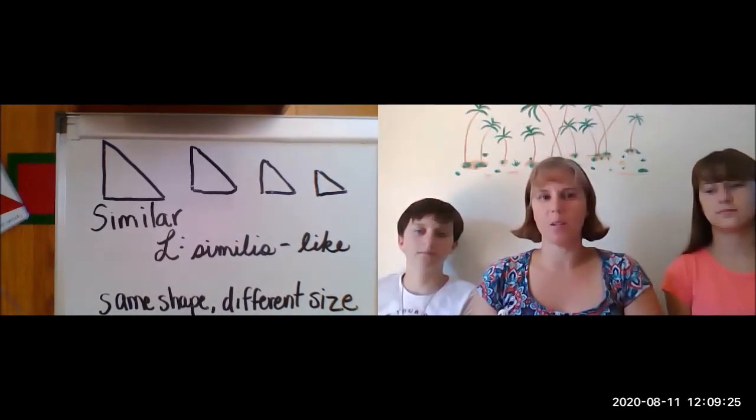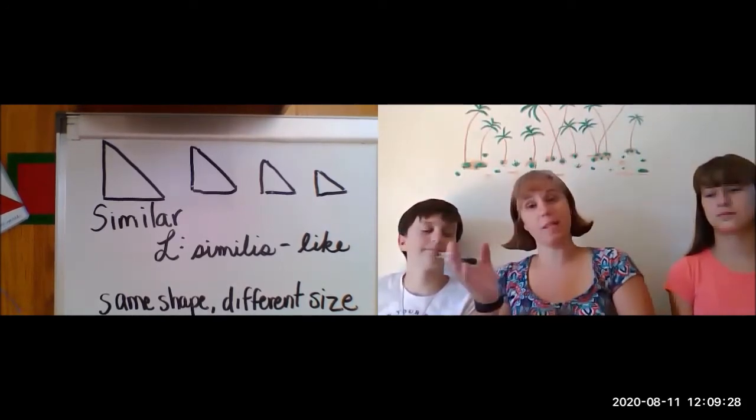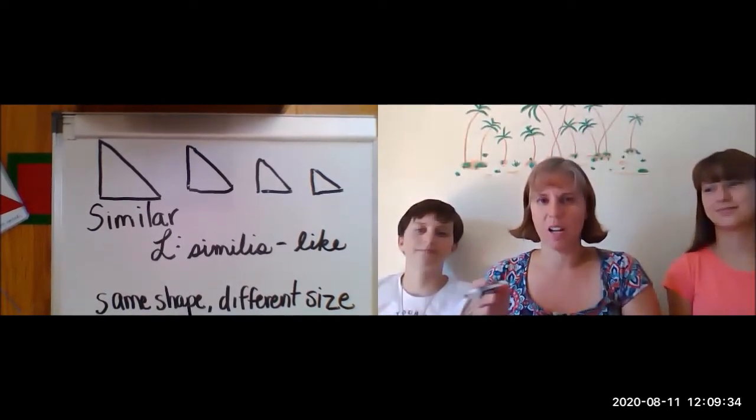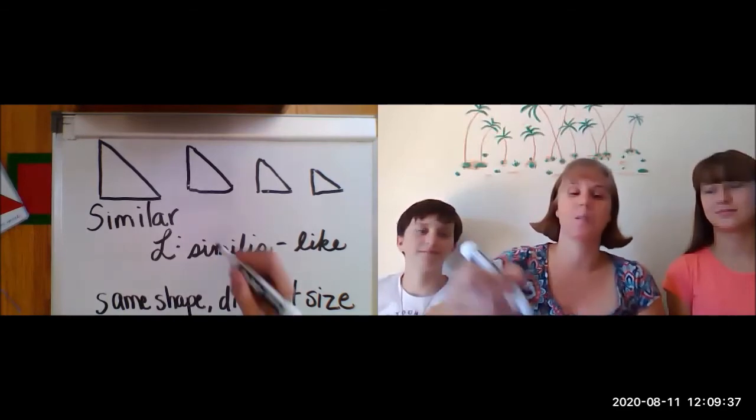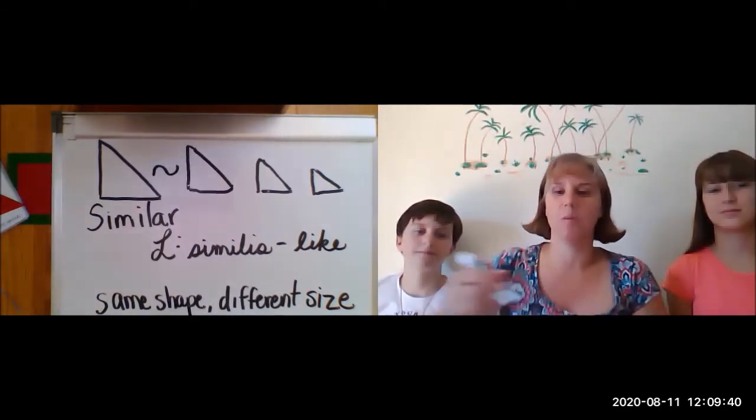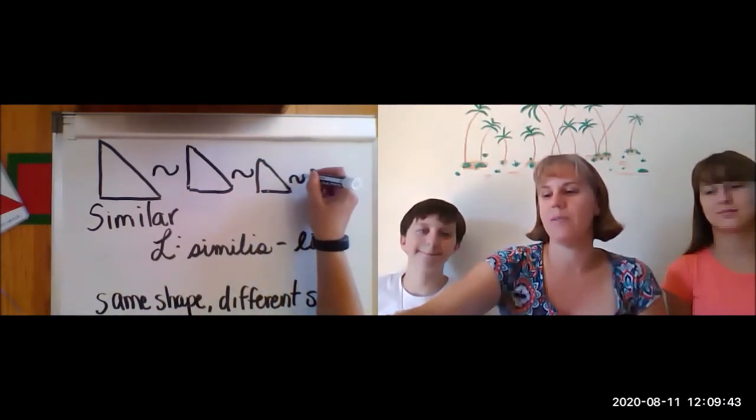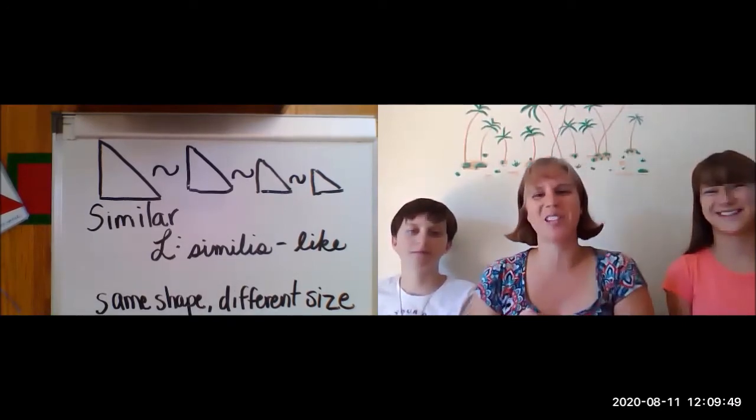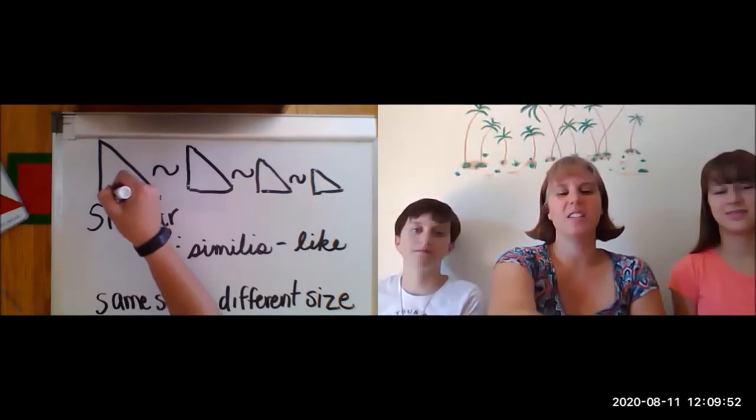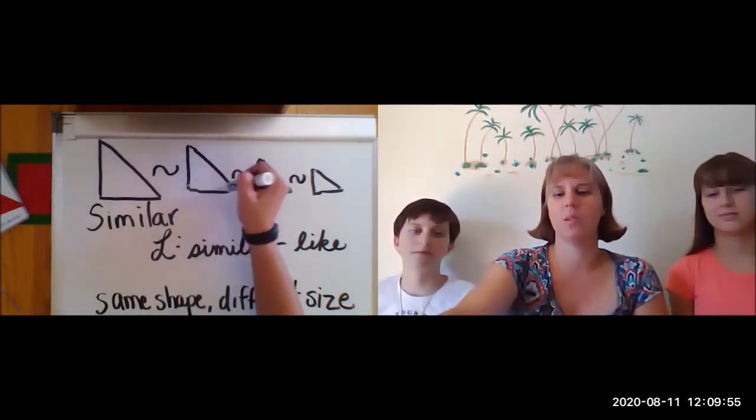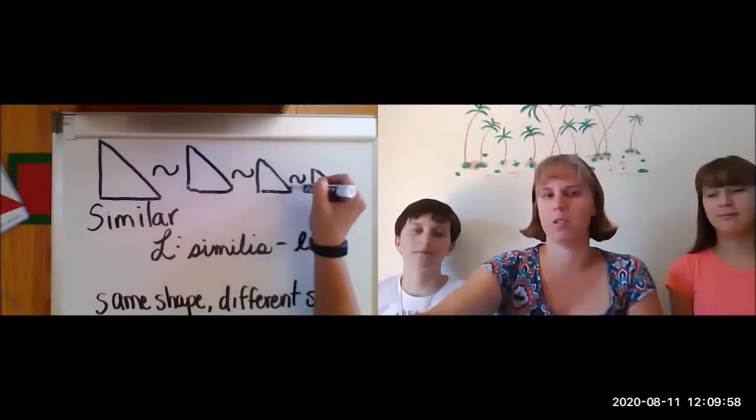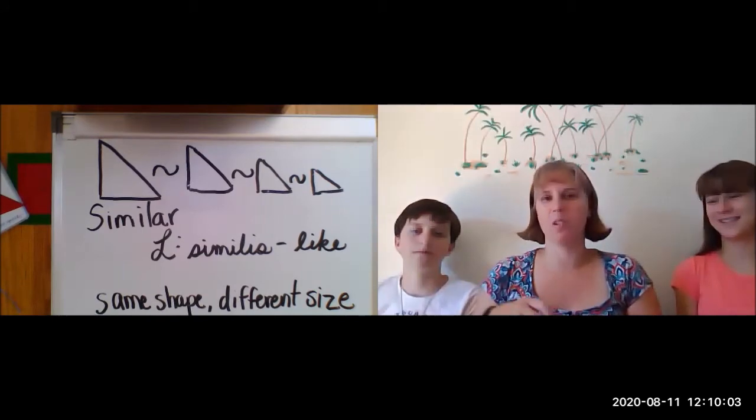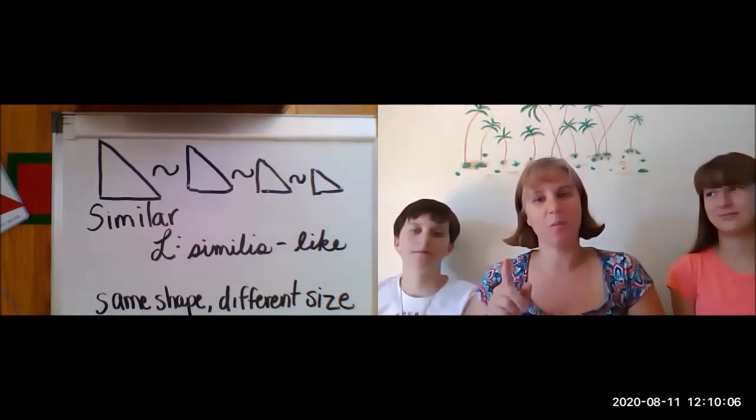Okay. And just like our last word, congruent, mathematicians like symbols. They don't like big, long words that take up all their space. So they have a symbol for similar. It might look a little familiar because it was part of our last symbol. It is a little sideways wiggle. It's kind of like an S, but if it's reversed, like backwards and turned on its side. So it's not quite like an S. This triangle is similar to this triangle, which is similar to this triangle and similar to this triangle. And you could keep going forever bigger and smaller because same shape, different size.